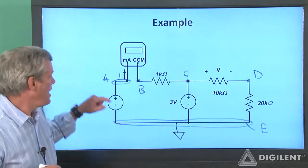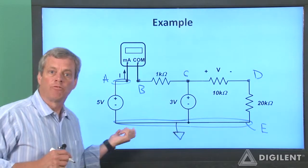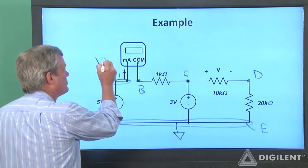Now at node A, we have positive 5 volts relative to ground. I can use either V plus or the waveform generator to apply 5 volts relative to ground. I'll use V plus to implement my 5 volt source.